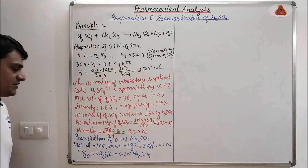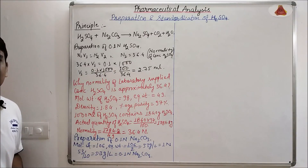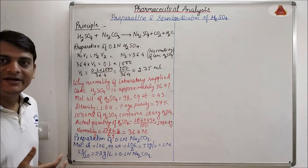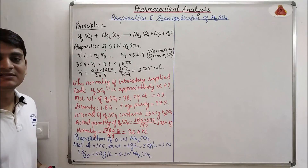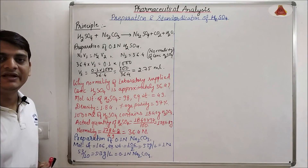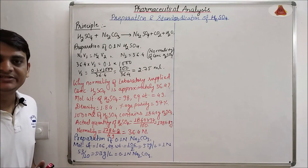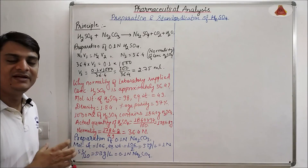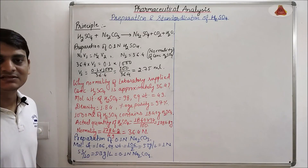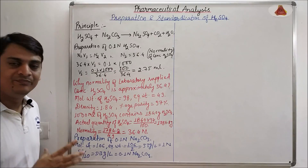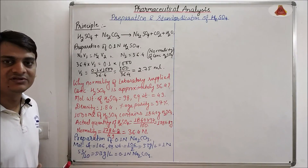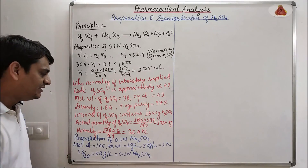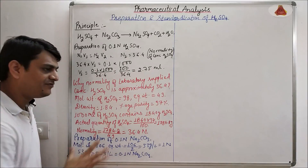For preparation of 0.1 normal Na2CO3: first take 5.3 g of Na2CO3 in a volumetric flask, then add 100 to 200 ml of distilled water and dissolve the Na2CO3 in the volumetric flask, and finally make up the volume to 1000 ml. The concentration of that Na2CO3 solution will be 0.1 normal.